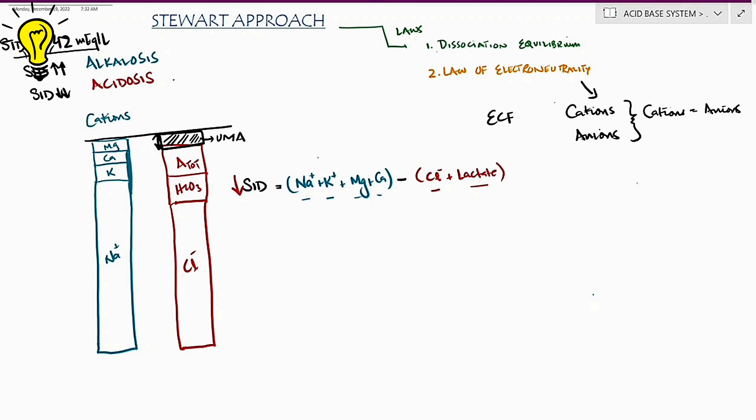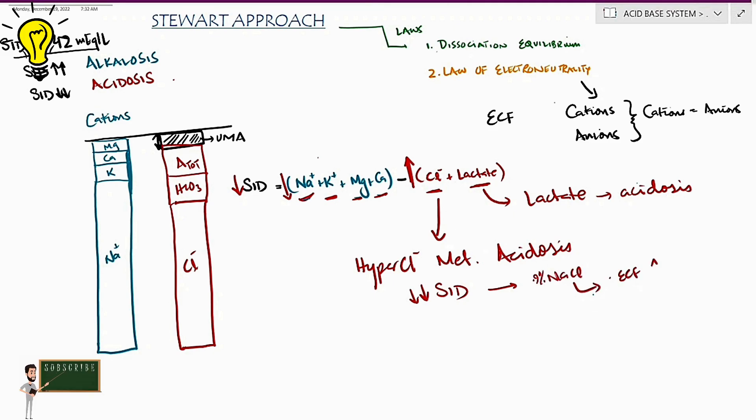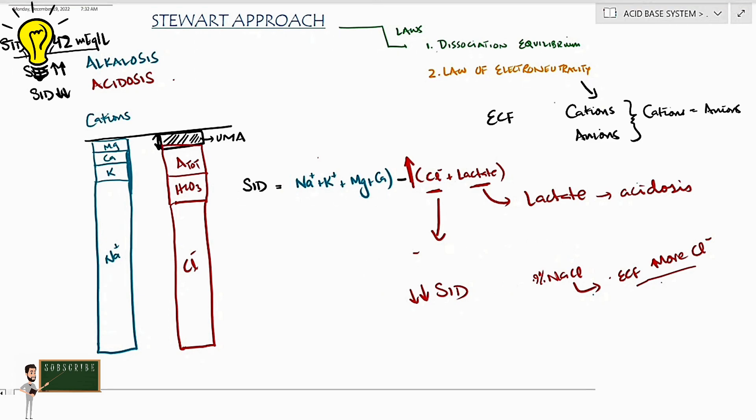On the contrary, any issue causing reduced strong ion difference, be it a decrease in strong cations or an increase in strong anions would cause acidosis. We know about lactic acidosis. Similarly, in hyperchloremic metabolic acidosis, it's the chloride ion causing decrease in strong ion difference. That's the real culprit. When you give too much of 0.9% sodium chloride, the fluid adds chloride to the extracellular fluid more than the sodium. So the net change in strong ion difference favors acidosis.